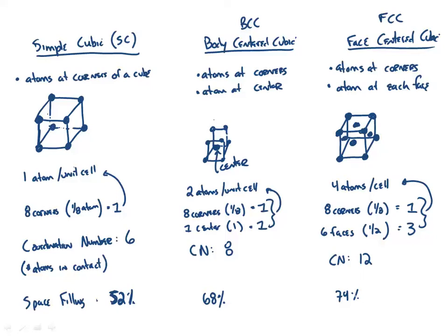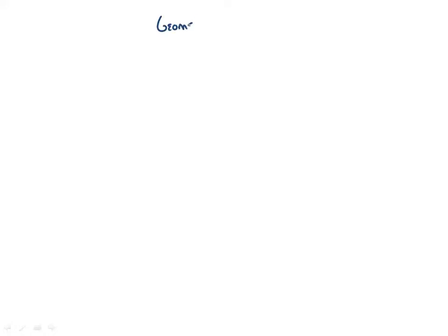You can read in your book about which types of crystals tend to be formed by what types of atoms. The book also discusses hexagonal closest packed, but we can ignore that and focus on the three cubic ones. This is all leading to some mathematics — we want to calculate densities, cell lengths, and atomic radii. You will get the formulas on a sheet provided with the test, so you don't need to memorize them.